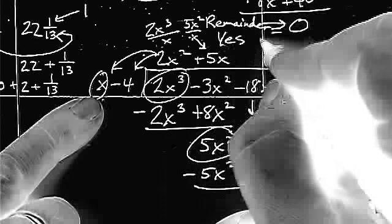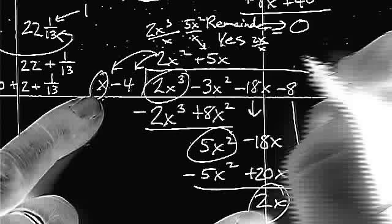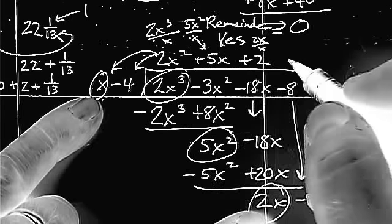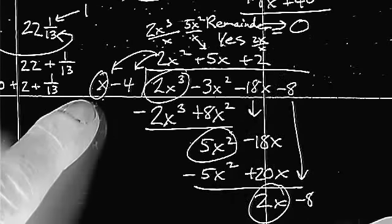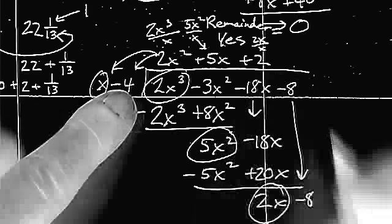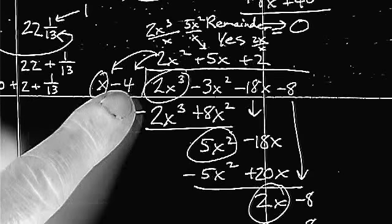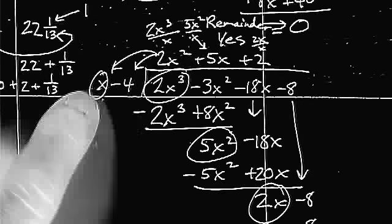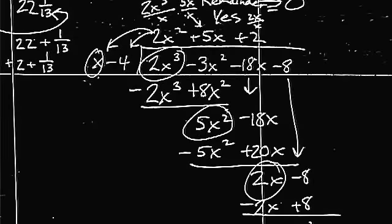Focus on the 2x and the 1x. 2x over 1x is the number positive 2. When I multiply that, it gives me 2x and a minus 8. Distribute the negative and add. Remainder is zero.